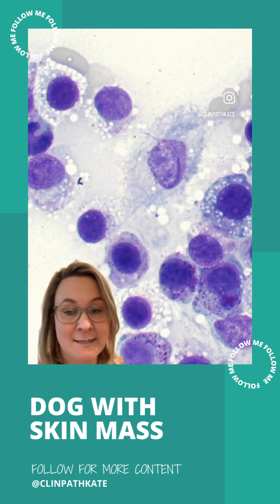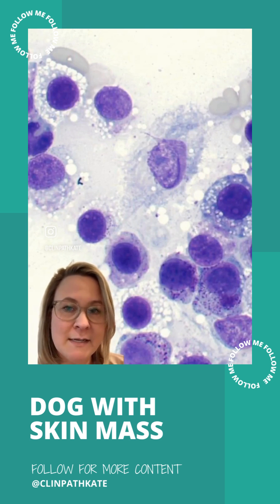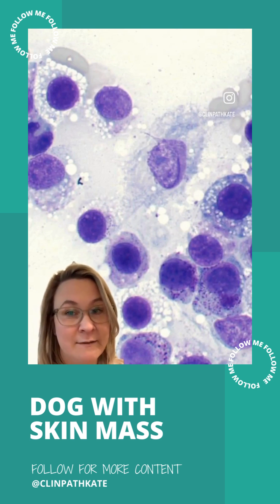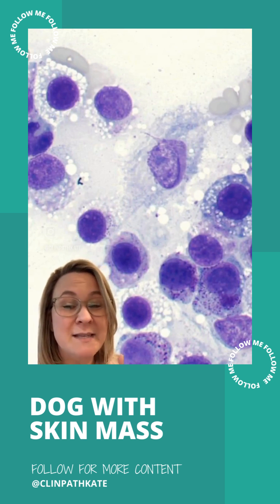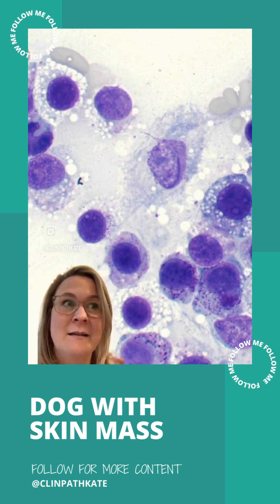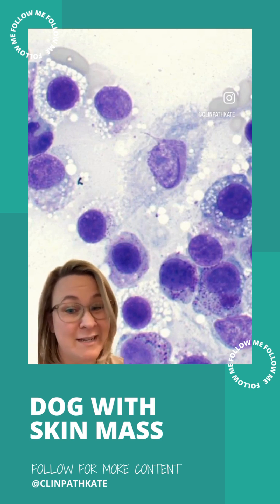So this is a mast cell tumor, and the reason that it's a little bit perplexing is because not all of the cells are highly granulated. This can happen. Sometimes this is a consequence of Difquik staining — Difquik is a great stain, but sometimes it will not stain cells very well. But sometimes, and I feel like more often, it's because the cells themselves are inherently not well granulated. And that can be a little bit of a concern that it's a higher grade tumor, but it's a mast cell tumor.